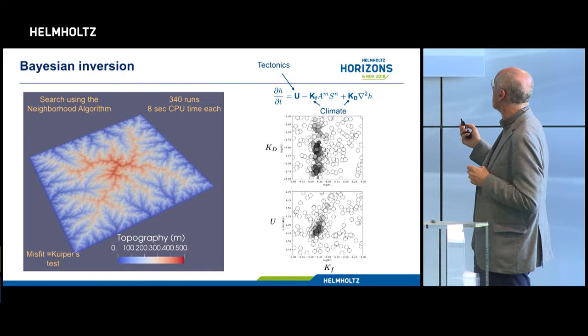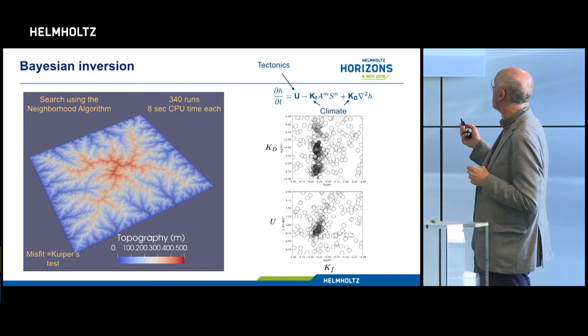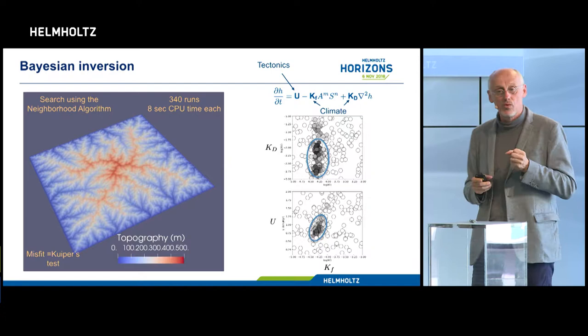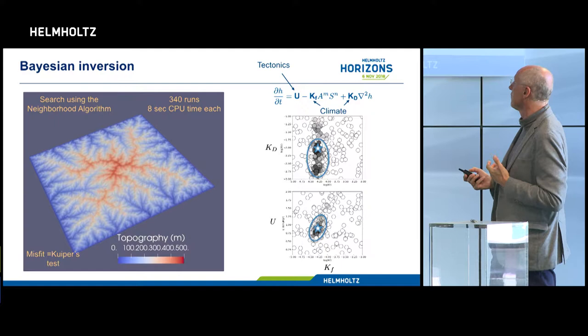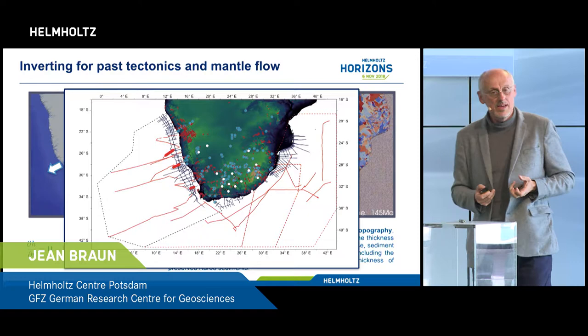We can also see that the solution converges to a range of values. In a Bayesian framework, we say that we have mapped the uncertainty of our observation into the uncertainty of our model parameter estimates. Let me give you an example of how we've applied this method to recover the surface evolution of Southern Africa.